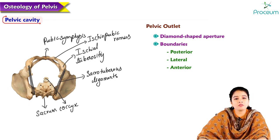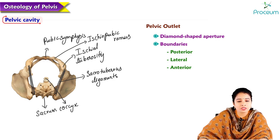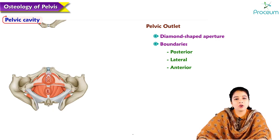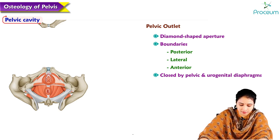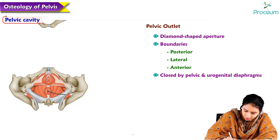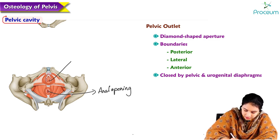The pelvic outlet is bounded posteriorly by the sacrum and coccyx, laterally by the ischial tuberosities and sacrotuberous ligaments, and anteriorly by the pubic symphysis, arcuate pubic ligament, and rami of the pubis and ischia. The pelvic outlet is closed by the pelvic diaphragm and urogenital diaphragm.